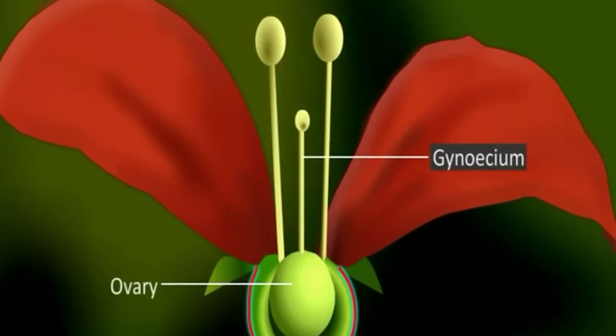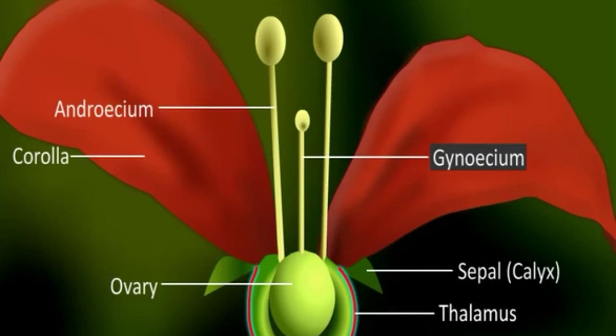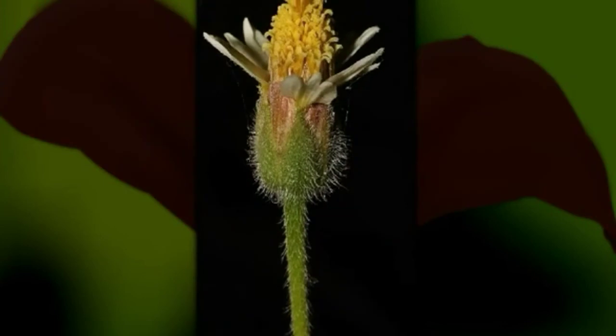In epigynous flowers, the ovary of the gynoecium is completely embedded in the thalamus. The wall of the ovary is completely fused with the thalamus. The remaining floral parts — calyx, corolla, and androecium — are arranged along the margins of the thalamus. The ovary is completely inside the thalamus, so it is called an inferior ovary. An example is tridax.